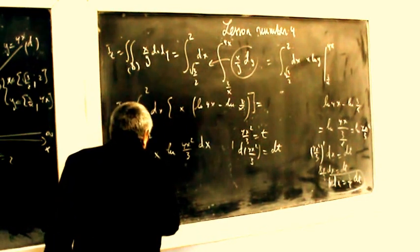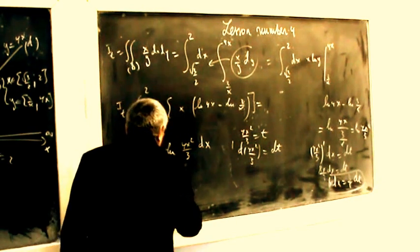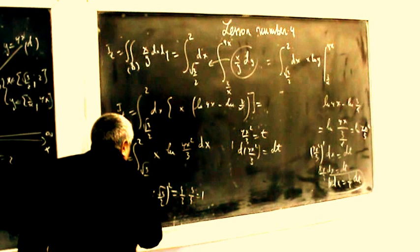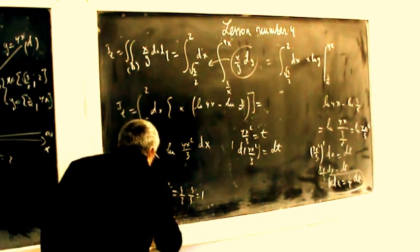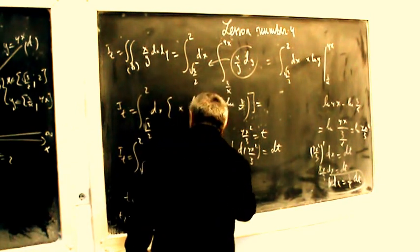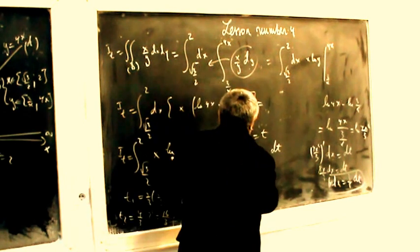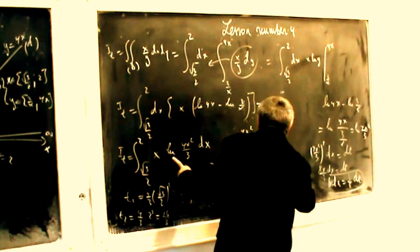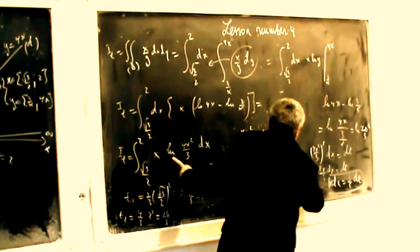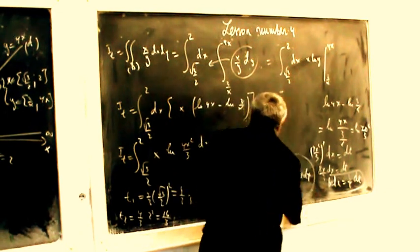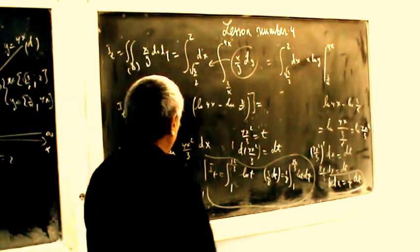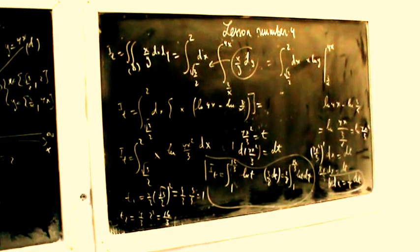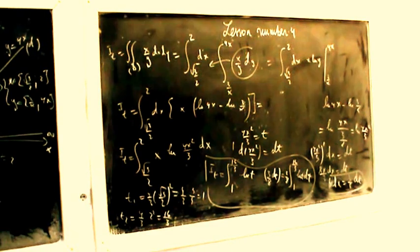Computing substitution limits: t1 equals 4 divided by 3 times (radical 3 divided by 2) squared, equal to 4 divided by 3 times 3 divided by 4, equal to 1. t2 equals 4 divided by 3 times 2 squared equals 16 divided by 3. So E total equals the integral from 1 to 16 divided by 3 of log t times 3 divided by 8 dt, giving E equal to 3 divided by 8 integral from 1 to 16 divided by 3 of log t dt.